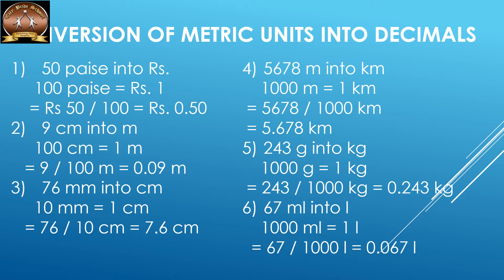The next one is 9 centimeters into meters. The conversion is 100 centimeters equal to 1 meter. We are converting a smaller unit to a bigger unit, so we will divide — that gives us 0.09 meters.